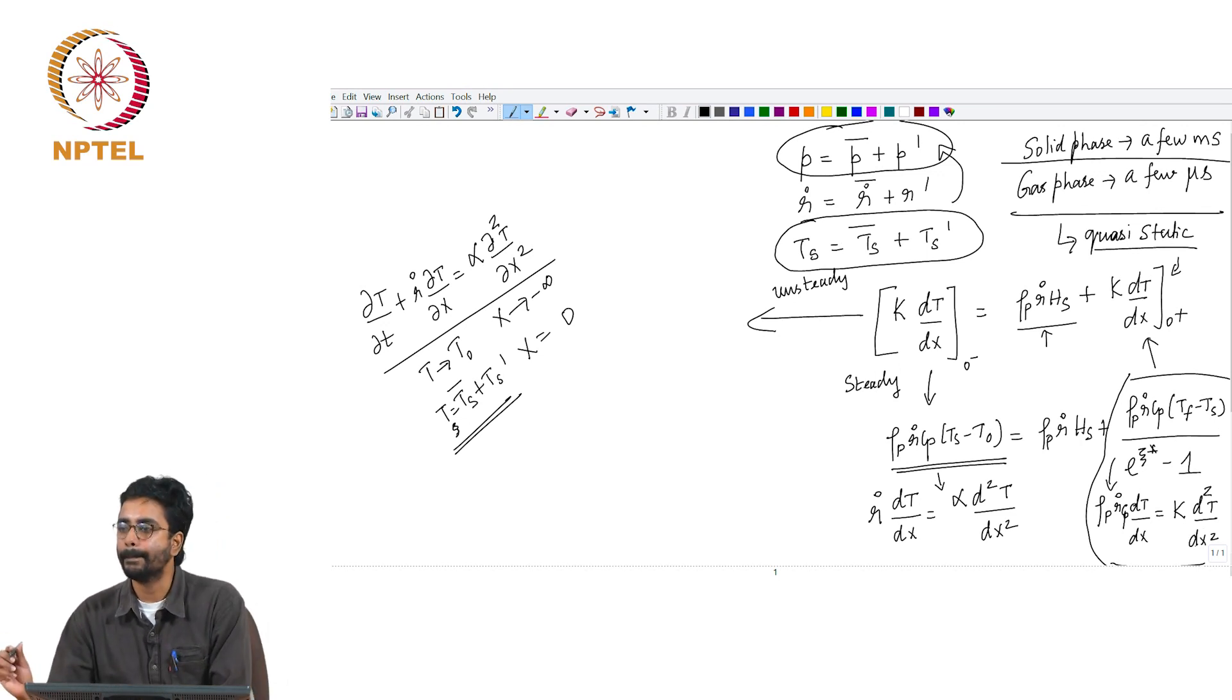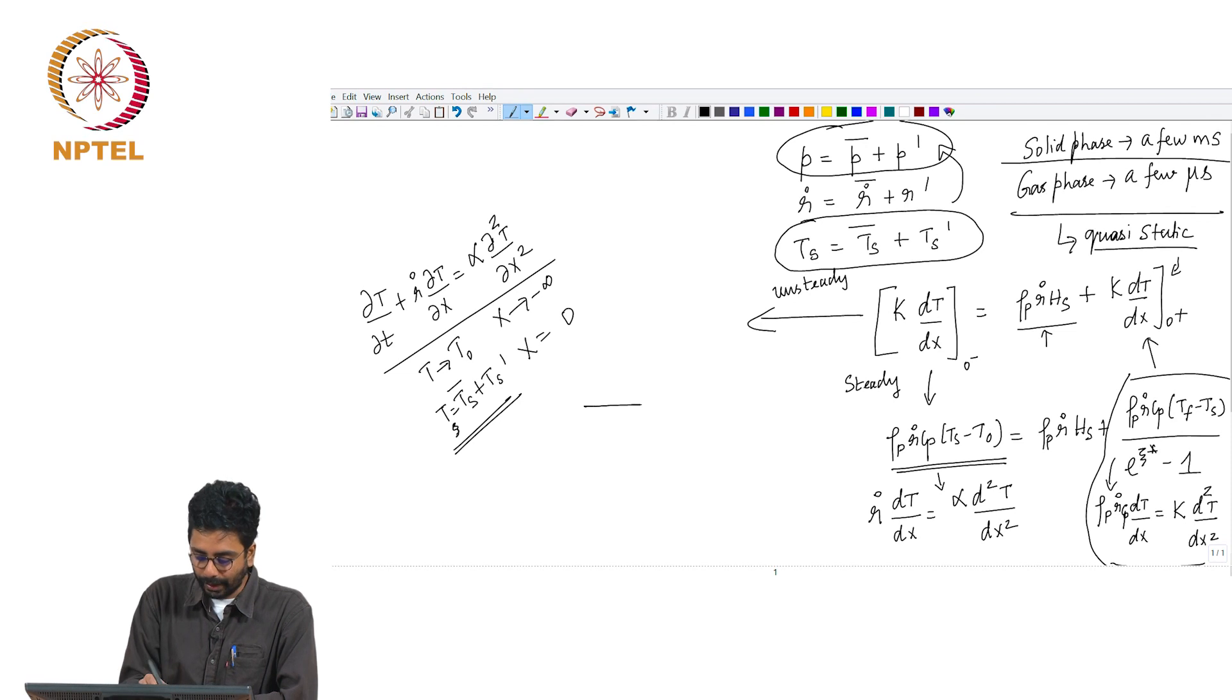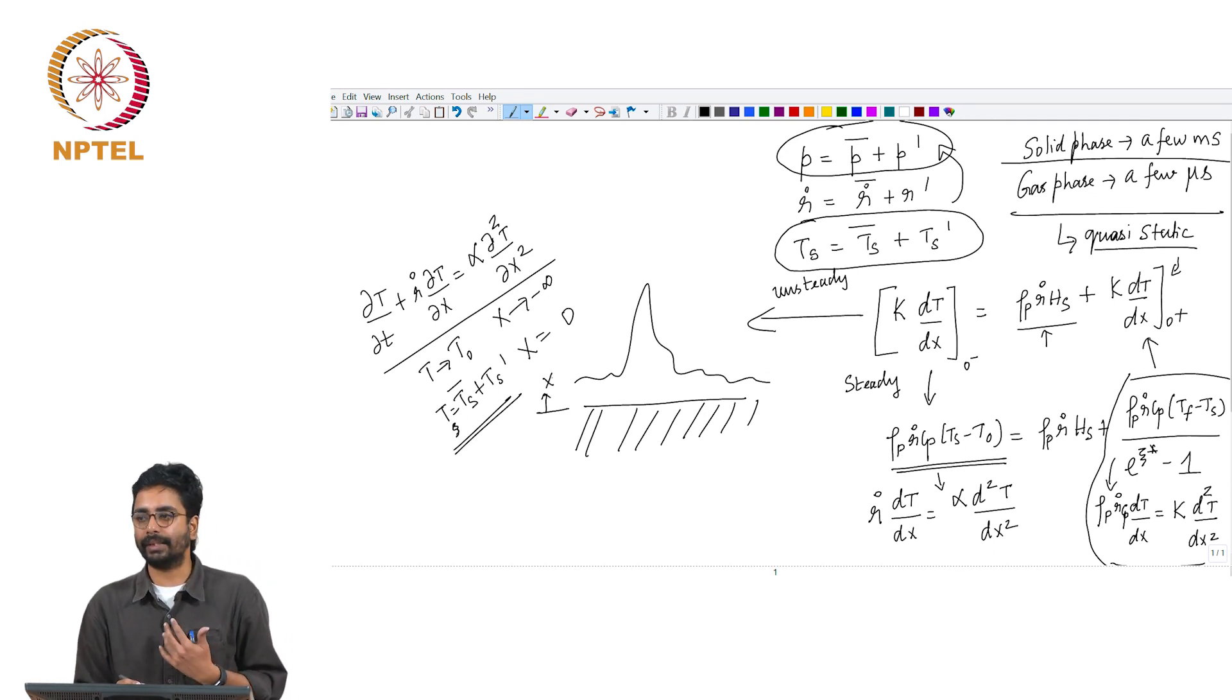This is the propellant. You have the flame structure here, something like that. This is x coordinate, and the coordinate is assumed to be attached to the regressing surface.